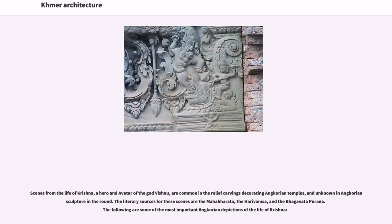Scenes from the life of Krishna, a hero and avatar of the god Vishnu, are common in the relief carvings decorating Angkorian temples, and unknown in Angkorian sculpture in the round. The literary sources for these scenes are the Mahabharata, the Harivamsa, and the Bhagavata Purana.